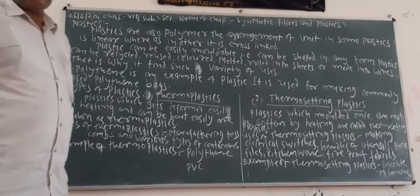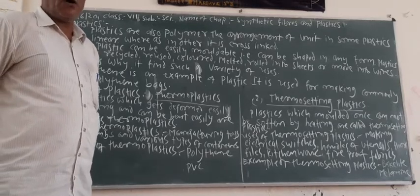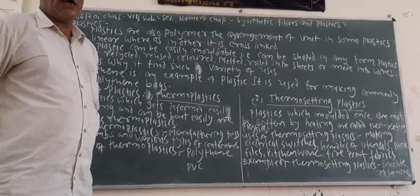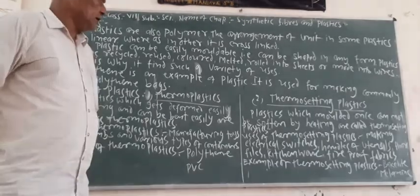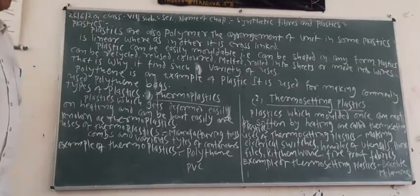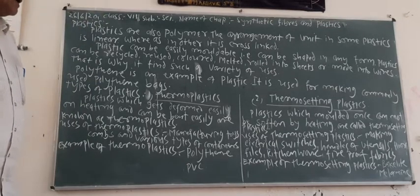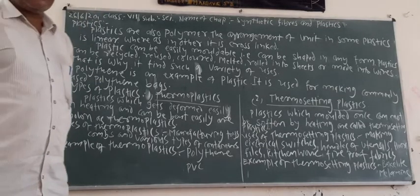What are the uses of thermosetting plastic? The uses of thermosetting plastics include making electrical switches. Electrical switches in our homes are made of thermosetting plastic.